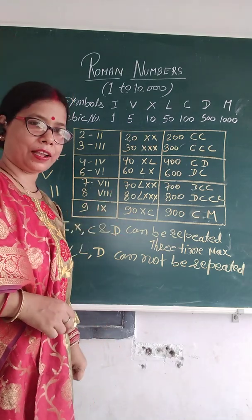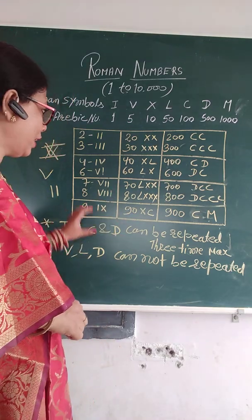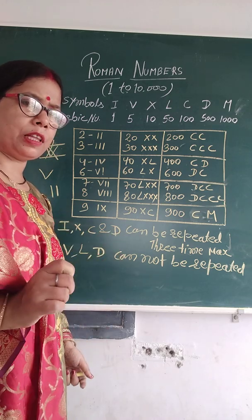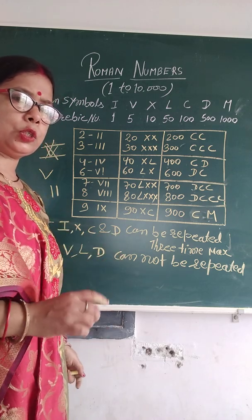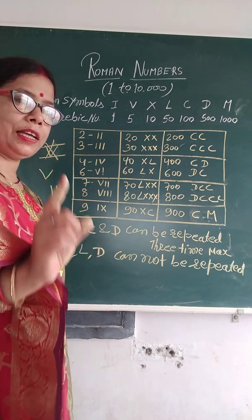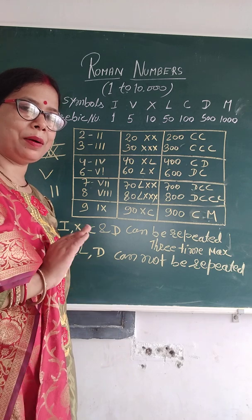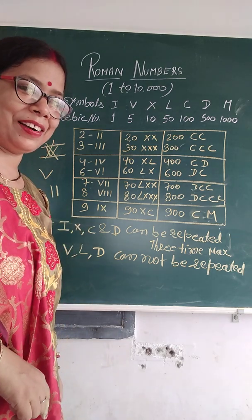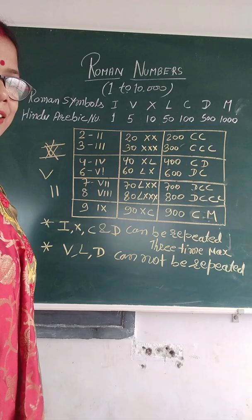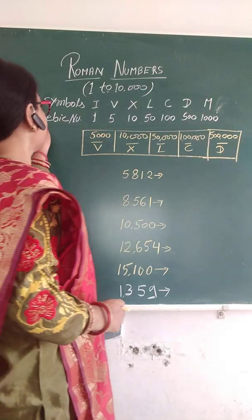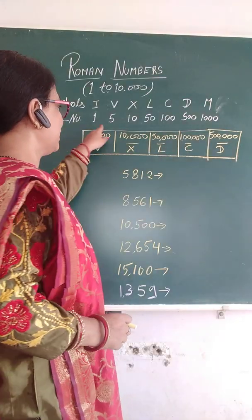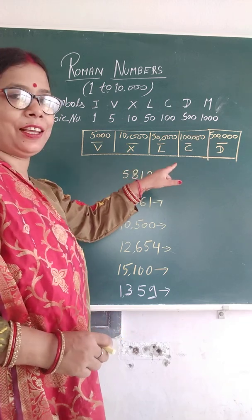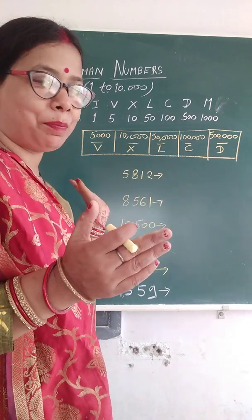Yeh table agar acche se hum log yaad kar lein, to hum logo ko koi bhi roman number mein koi problem nahi hogi — 1 to 500,000. Okay, so these are some examples that I am going to tell you now.